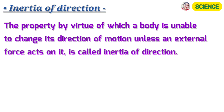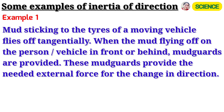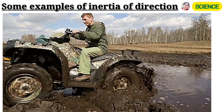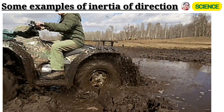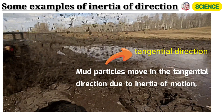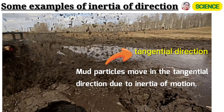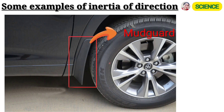The property by virtue of which a body is unable to change its direction of motion unless an external force acts on it is called inertia of direction. Example 1: Mud sticking to the tires of a moving vehicle flies off tangentially. To prevent the mud from flying onto the person or vehicle in front or behind, mud guards are provided. These mud guards provide the needed external force for the change in direction.